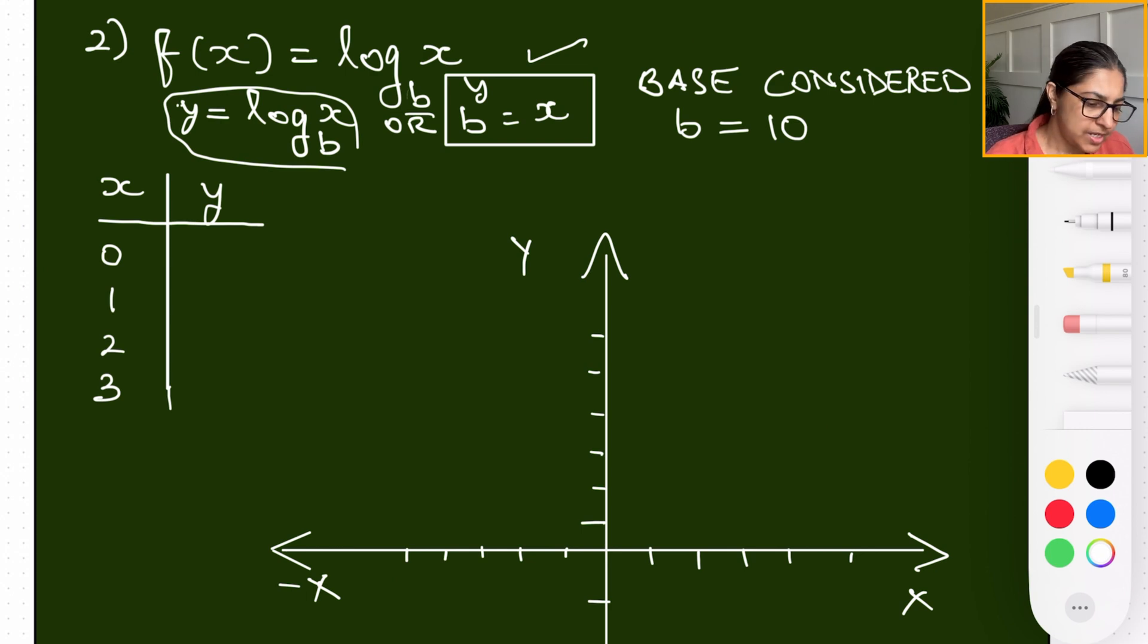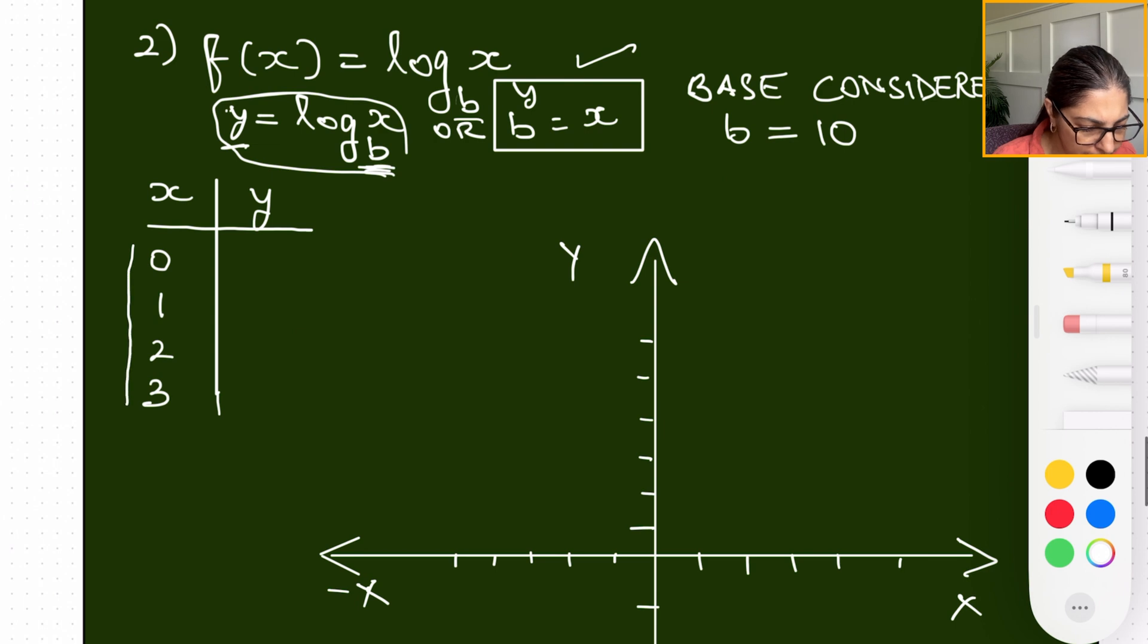Which is written as this way, and I've already gone ahead and given you the definition, which is interpreted as b power y equal to x. Meaning to what exponent are we going to raise the base b of the logarithmic function to figure out the answer. The base that we have considered for the graph is going to be 10.